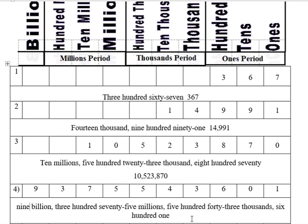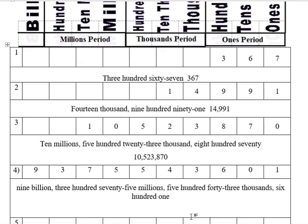How would that look as a correctly written number? Nine, comma, three-seven-five for millions, five-forty-three for thousands, six hundred one. So that would be nine billion three hundred seventy-five million five hundred forty-three thousand six hundred one.